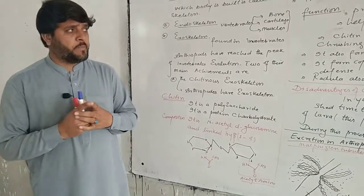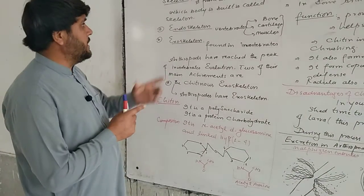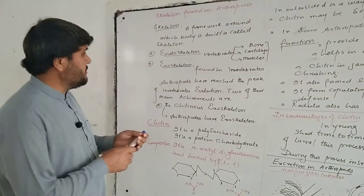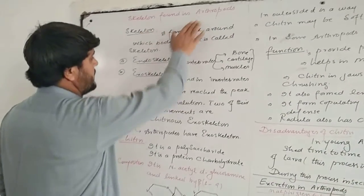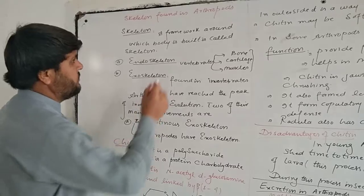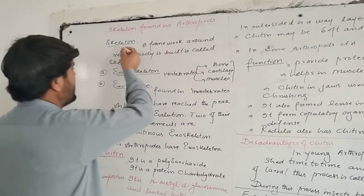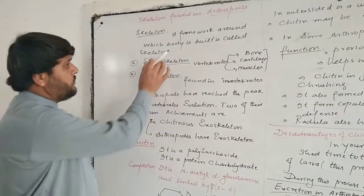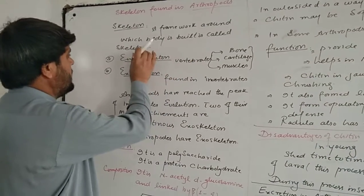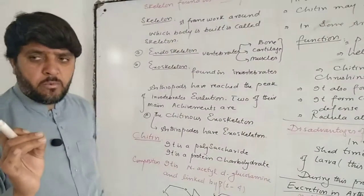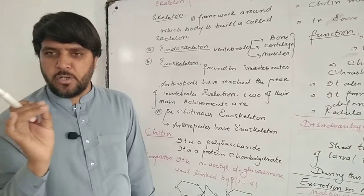Today our topic of discussion is some special characters in arthropods. The first one is skeleton found in arthropod. What is a skeleton? A framework around which the body is built is called skeleton.